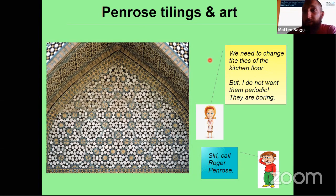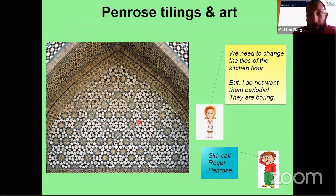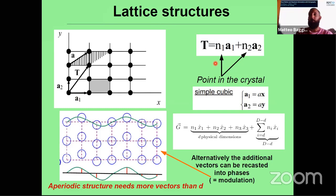These quasicrystal structures appear in a lot of architectural and artistic realizations, especially in Arab architecture. You can also find them in tilings on floors — in bathrooms or kitchens — which look exactly like quasicrystal patterns.